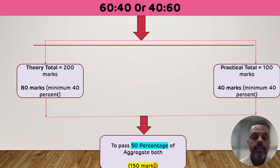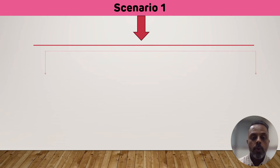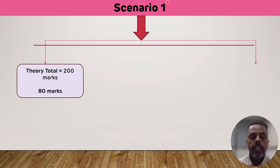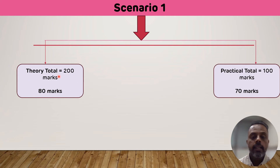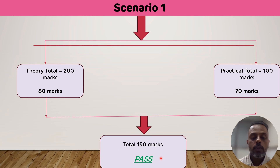Scenario number one: if a student has scored 80 marks out of 200 in theory and 70 marks out of 100 in practical — in both theory and practical the student has scored the minimum 40%, and the aggregate of the two is 150 marks — so the student is declared as passed. That is scenario number one.